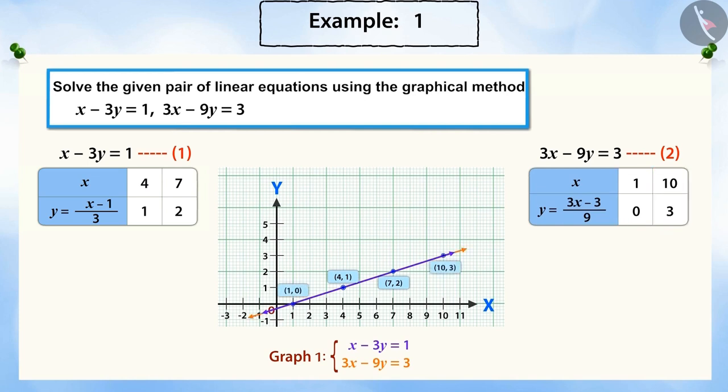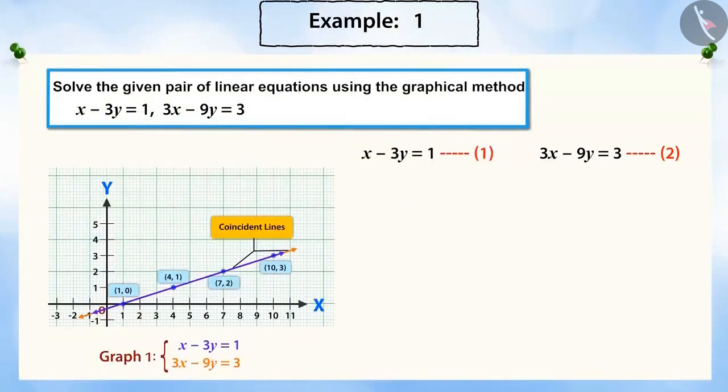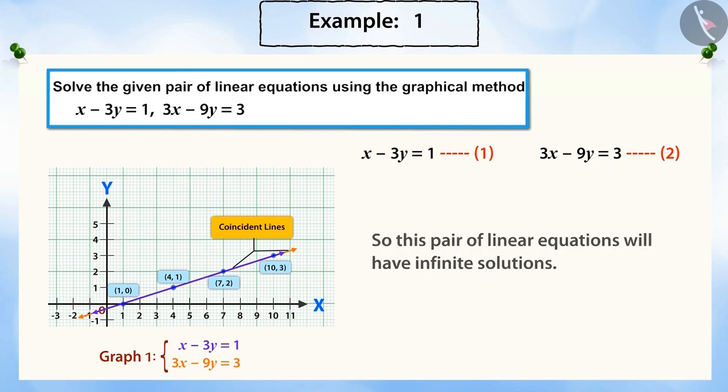You can see that these two lines are coincident lines. Can you tell what this means? This means that the pair of equations is a dependent, consistent pair. So this pair of linear equations will have infinite solutions.